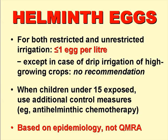Finally, we come to helminth eggs — the eggs of Ascaris, Trichuris, and the human hookworms Ancylostoma and Necator. To protect the health of both field workers and crop consumers, WHO recommends a maximum count of one egg per litre of treated wastewater, although in the case of drip irrigation of high-growing crops like tomatoes, no recommendation is necessary. This guideline value of no more than one egg per litre does not, however, protect children under the age of 15, so when these are exposed by working or playing in wastewater-irrigated fields, additional control measures are needed — for example, regular deworming, either at home or at school. This helminth egg guideline is based on epidemiological data, mainly from studies in Mexico, so it was not necessary to use QMRA to derive the guideline.